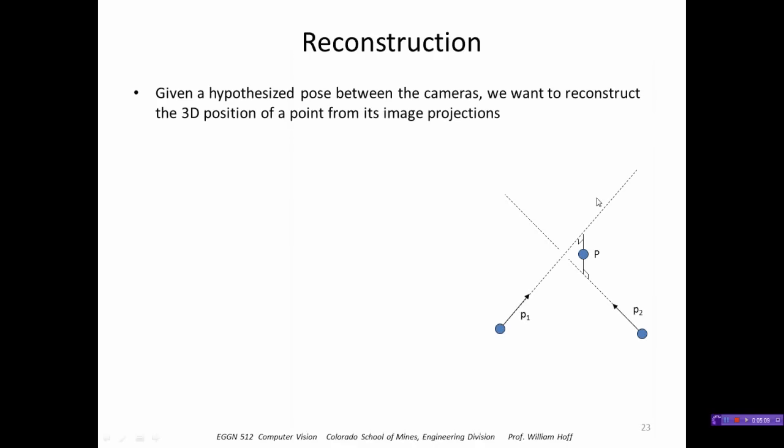So let's look at how to reconstruct a point. We see a point, we're going to reconstruct by triangulation. We see a point P in two views from P1 and P2, and we want to find the 3D point that lies as close as possible to the intersection of those two rays.